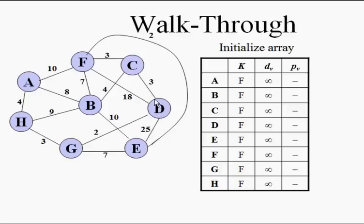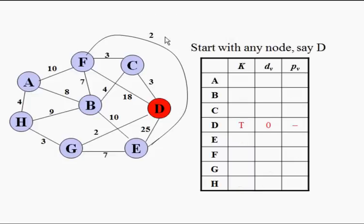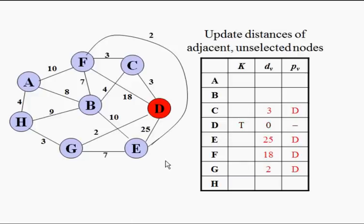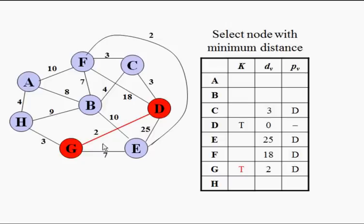From d we form a set and then expand to other vertices from that set. Looking at the table, we record the weights, predecessor, and edges. From d, d to g is actually the minimum, so we go from d to g first.